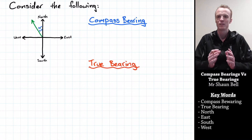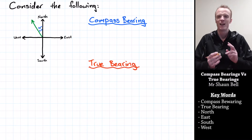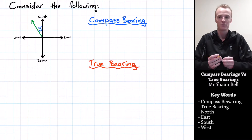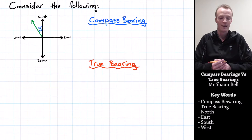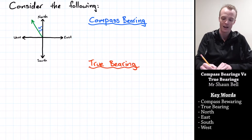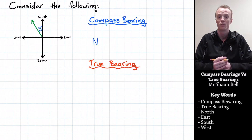Let's start by looking at how we describe that direction with compass bearings. When we record compass bearings, I like to think of it as answering three simple questions. The first question is: is that direction closer to North or to the South? In this case it's going to be closer to the North direction, so we put down a capital N.